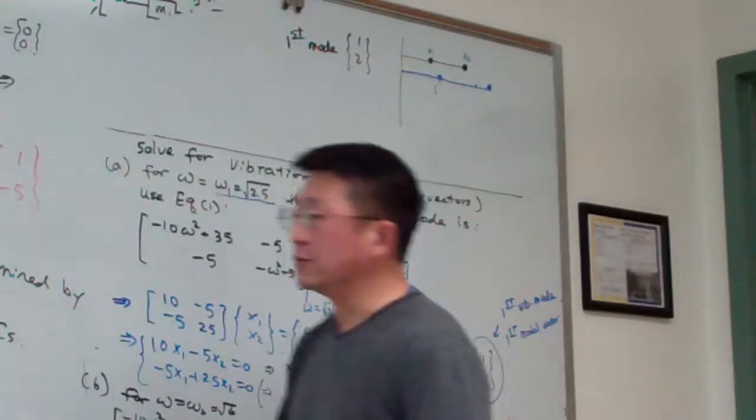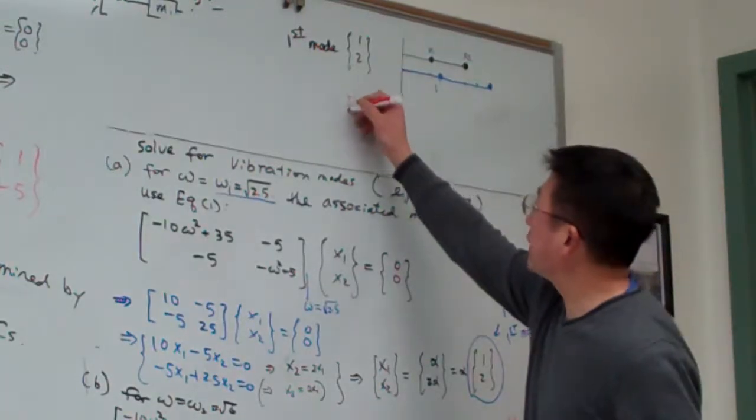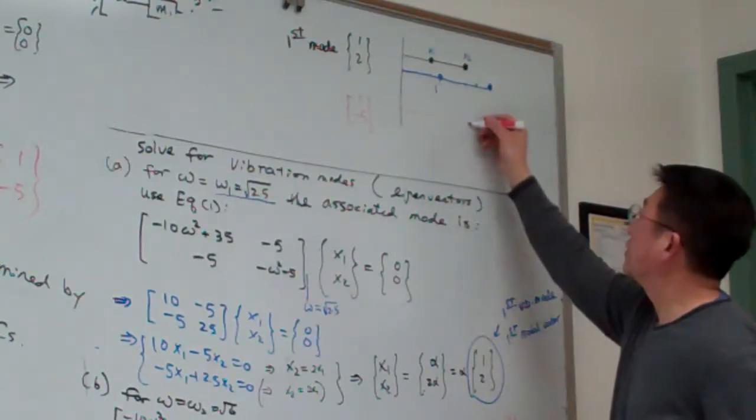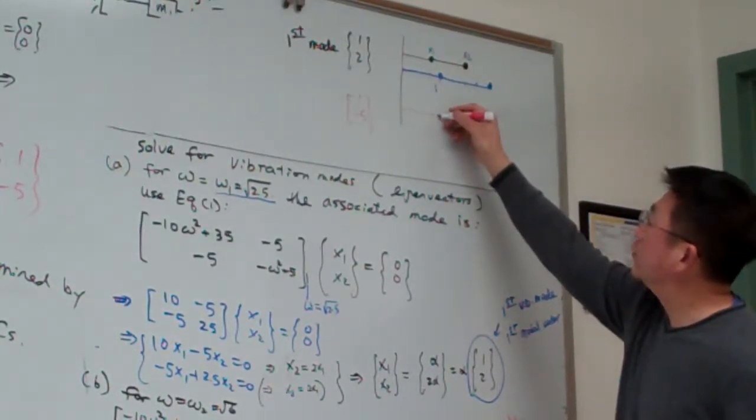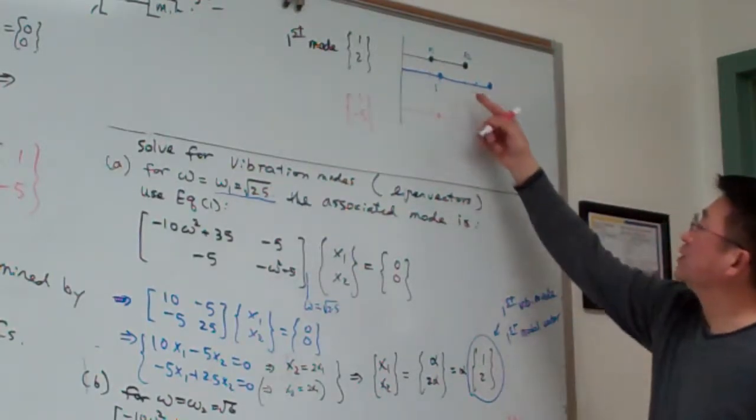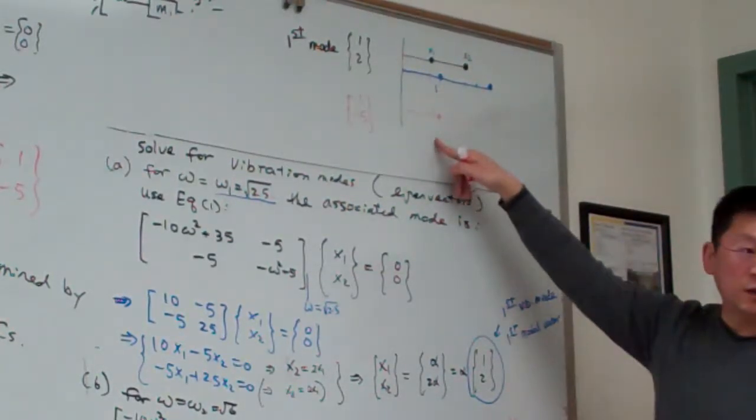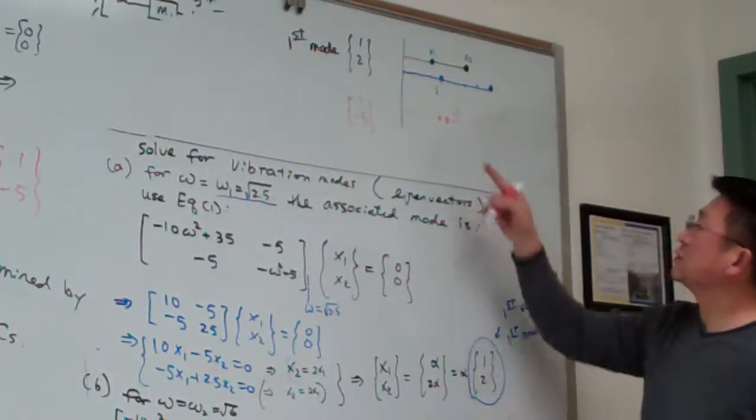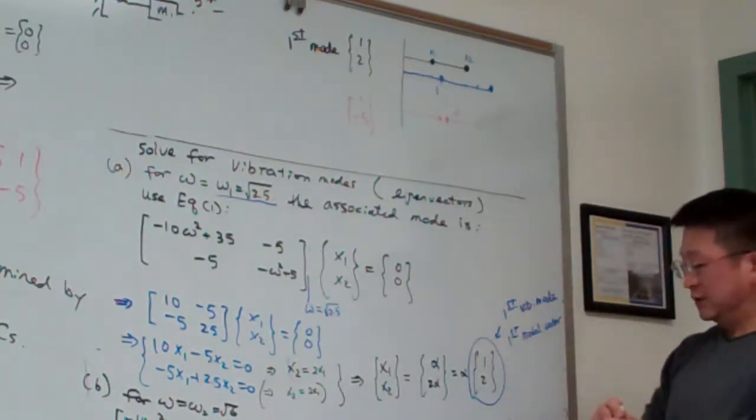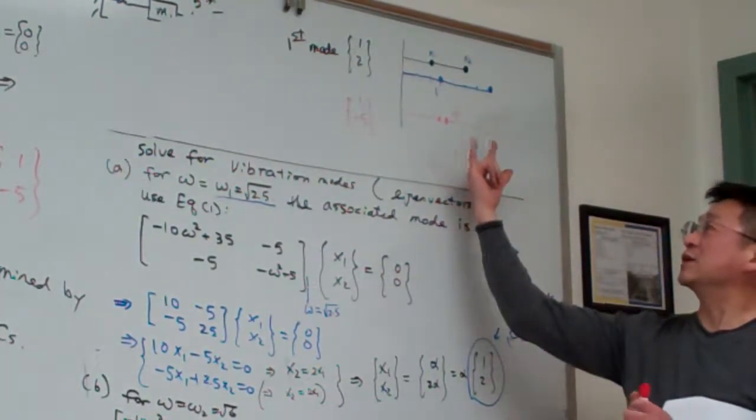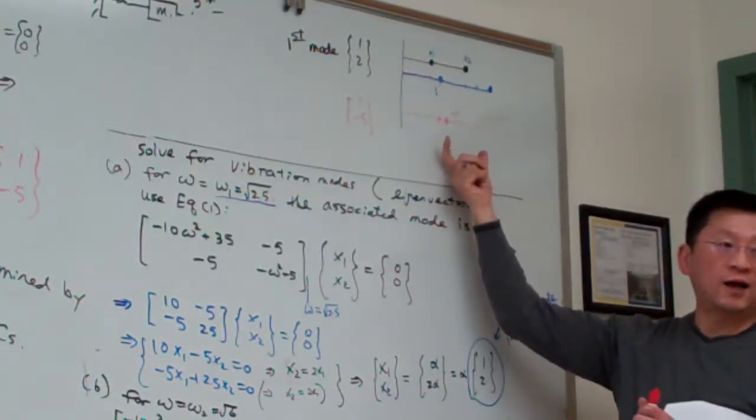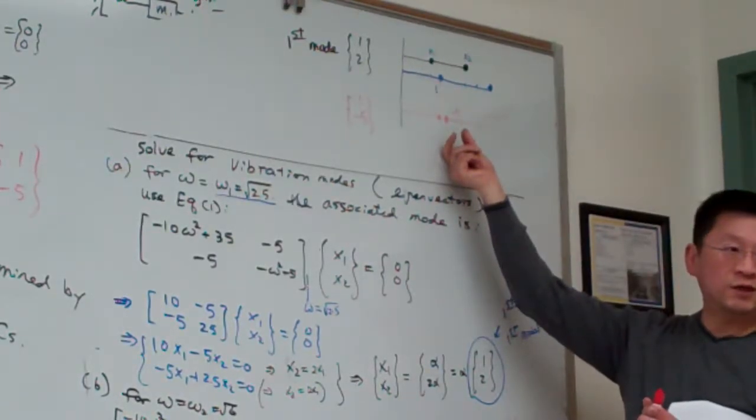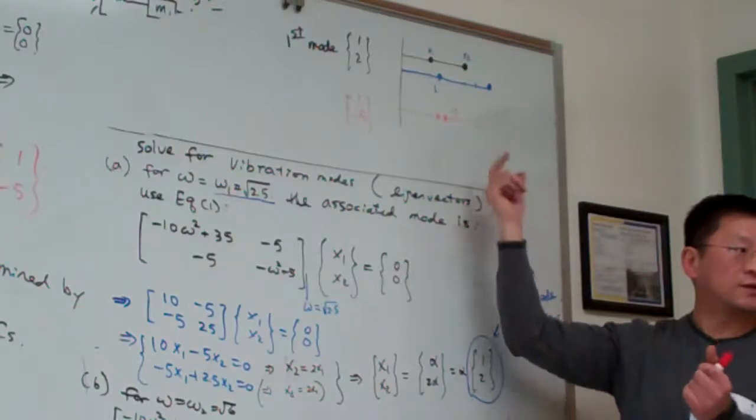And the second mode is 1 minus 5. Then here you can see if the first one moves by one portion here, the second one moves by the negative 5 portions. 1, 2, 3, 4, 5. So this is the vibration mode. It's such that the two things are simply in 180 degrees difference. So they either move together toward each other or move away from each other. That is the second mode. Are we okay?